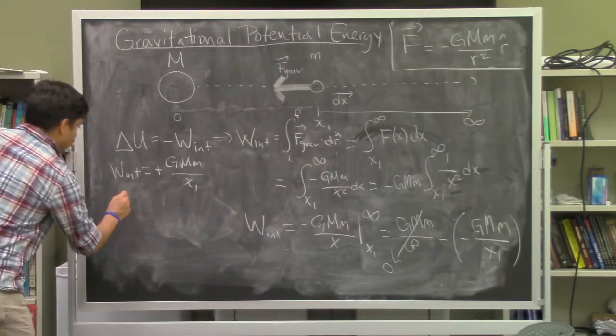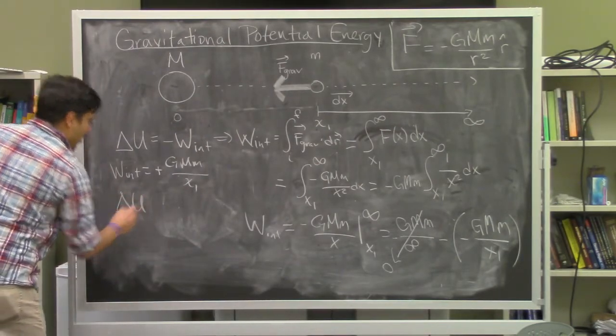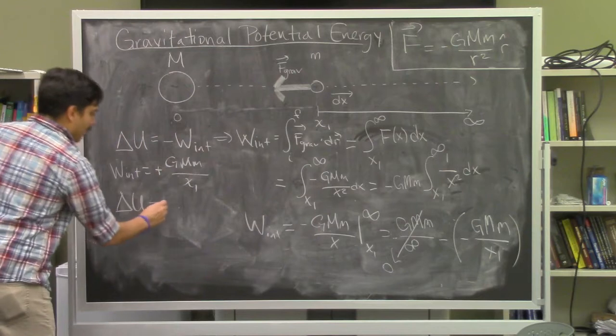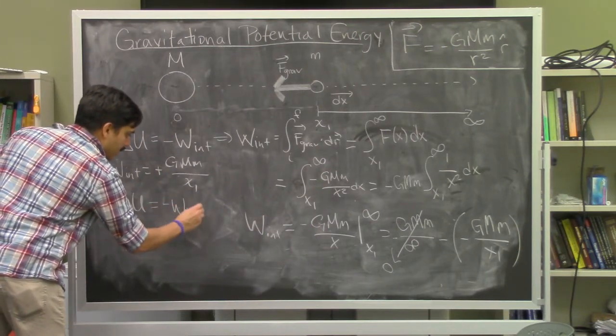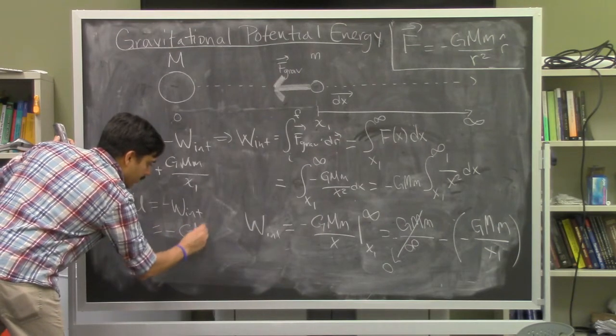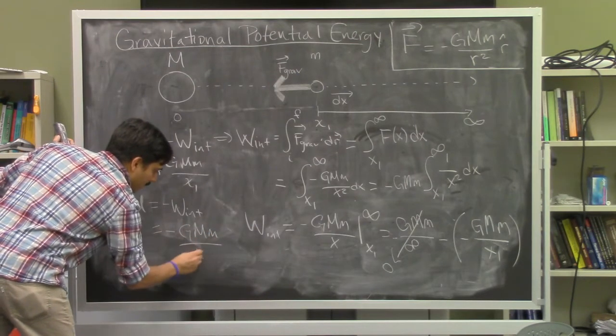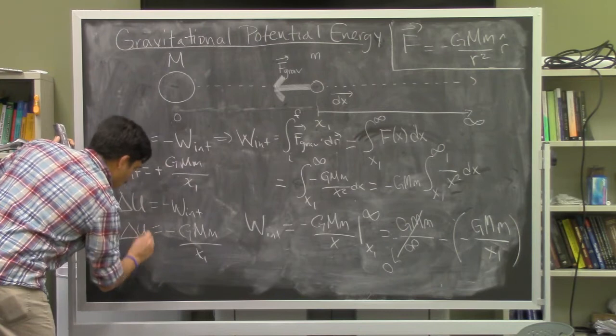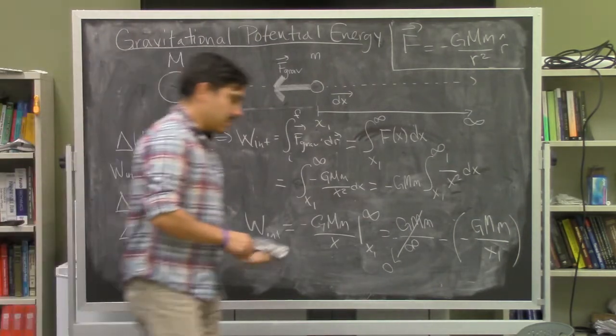The change in potential energy is ΔU = -W_internal = -GMm/x₁. That's how the potential energy changes in this system.